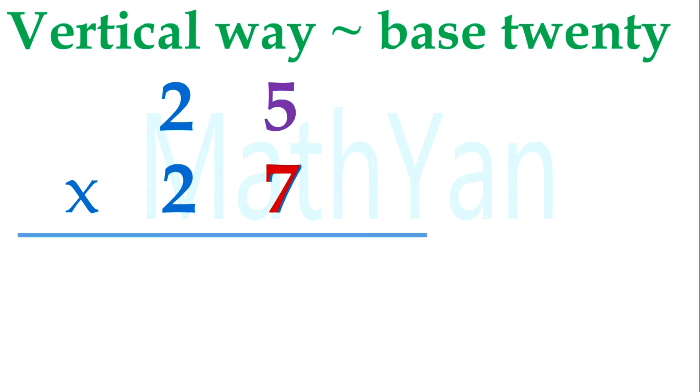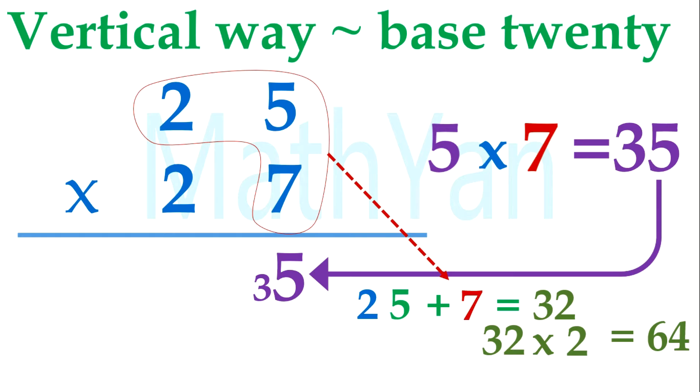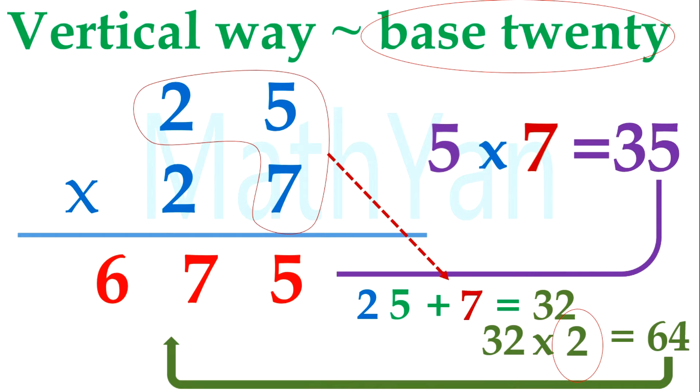25 times 27: 5 times 7 is equal to 35. But due to its base 20, only one digit allowed, so we need to carry forward. Part 2 is 25 plus 7, so it's 32. Remember, times 2 because of base 20, that's 64. But remember, you need to add 4 plus 3 is still 7, so the answer is 675.